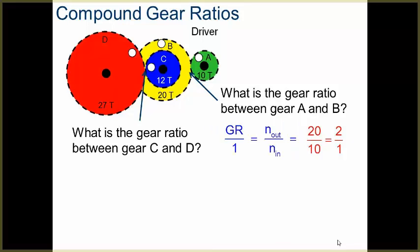Next, I'm going to look at the gear ratio between gear C and gear D. Same thing, my gear ratio is my number of teeth out over my number of teeth in. And that comes out to be 2 and a quarter.